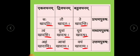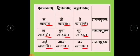The endings Si, Thaha, and Tha are used for Madhyama Purusha — that is the second person — in Ek Vachanam, Dvi Vachanam, and Bahu Vachanam. Then for Uttama Purusha: Aham Khadami, Avam Khadamah — the endings Mi, Vaha, and Maha are used for Ek Vachanam, Dvi Vachanam, and Bahu Vachanam.